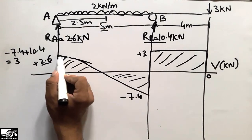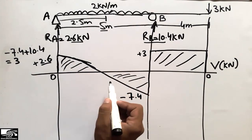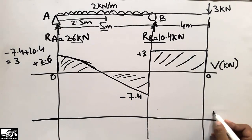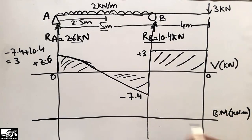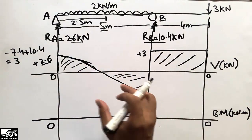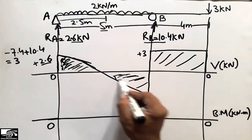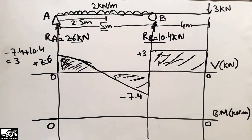Now we draw the bending moment diagram from the shear force diagram. We draw the reference line for bending moment in kilonewton-meters. To find the bending moment diagram, we need to find the areas of each shape within the shear force diagram — first this portion, then this portion, then this portion.